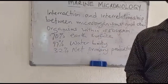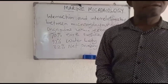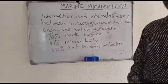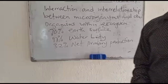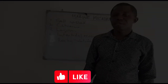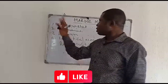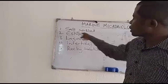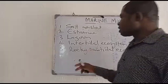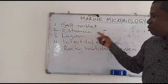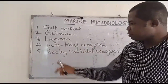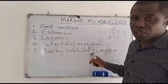The marine ecosystem is made up of more than 70% of the earth's surface, more than 97% of the water bodies, and 32% of the net primary production. It includes the salt marshes, the estuarine, the lagoon, the intertidal ecosystem, and the rocky subtidal ecosystem.